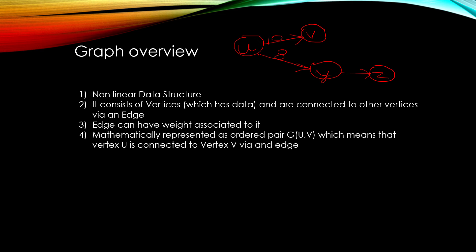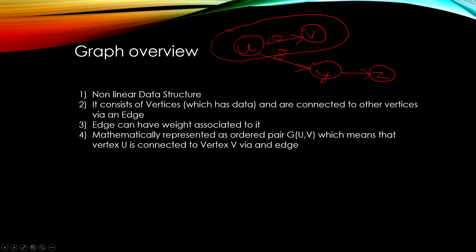Mathematically, a graph is represented as an ordered pair G(u, v), which means vertex u is connected to vertex v via an edge. This is a generalized representation for any graph — u and v can have different values. You can think of it like a function.